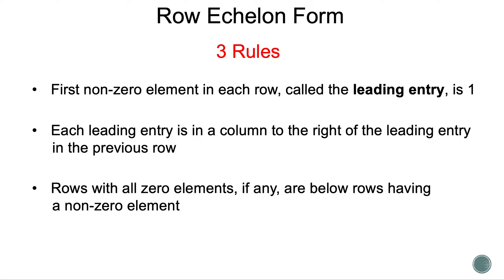Row Echelon Form has three rules. Rule 1: the first non-zero element in each row, called the leading entry, is 1. Rule 2: each leading entry is in a column to the right of the leading entry in the previous row. Rule 3: rows with all zero elements, if any, are below rows having a non-zero element.